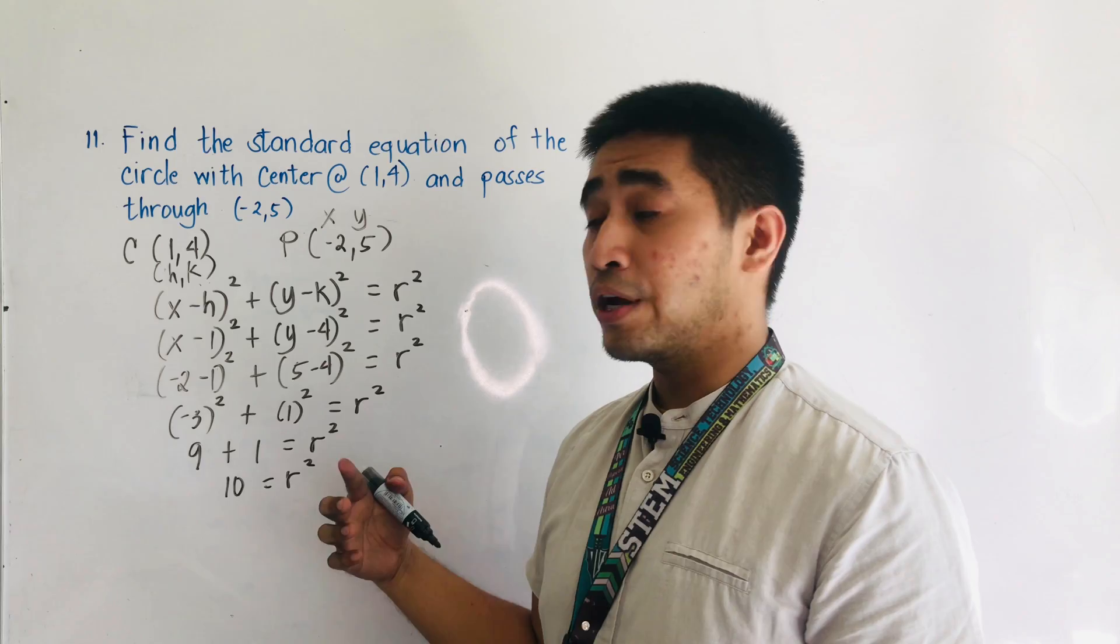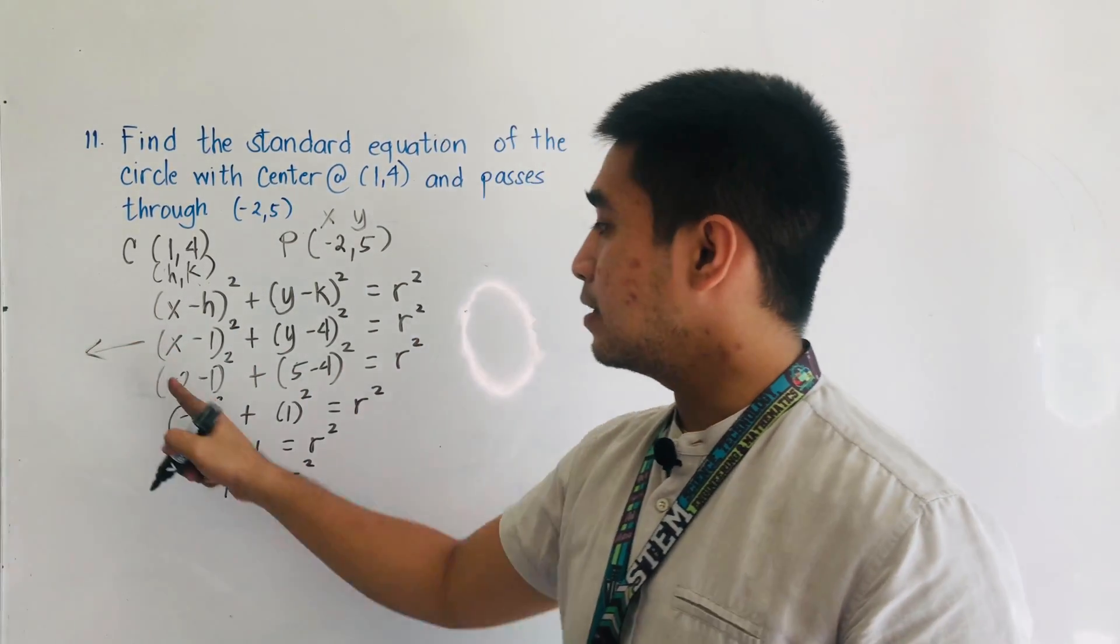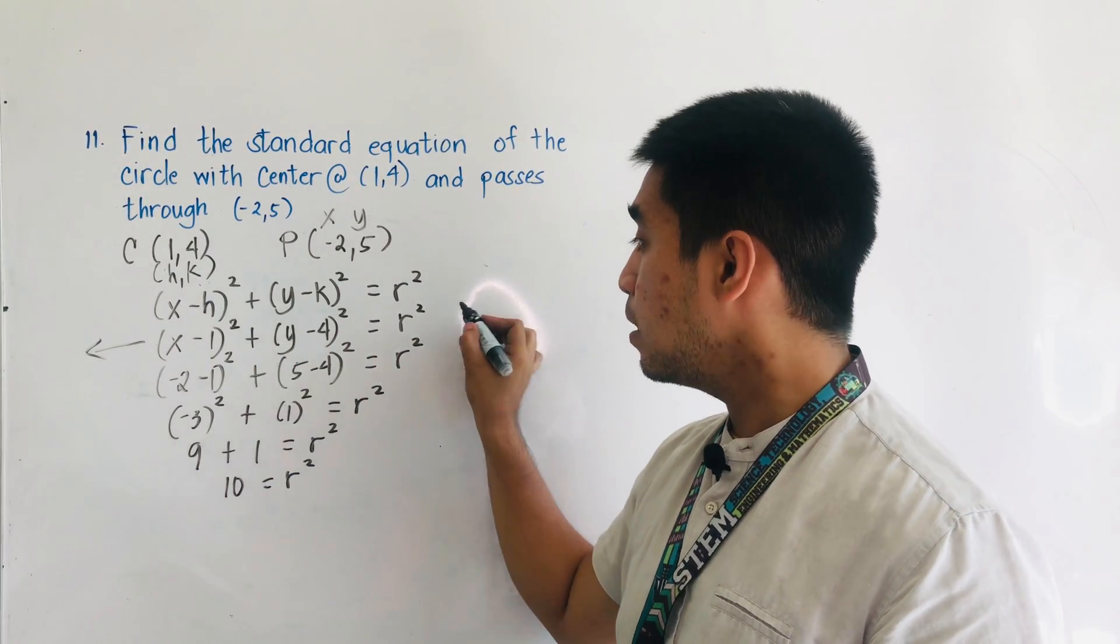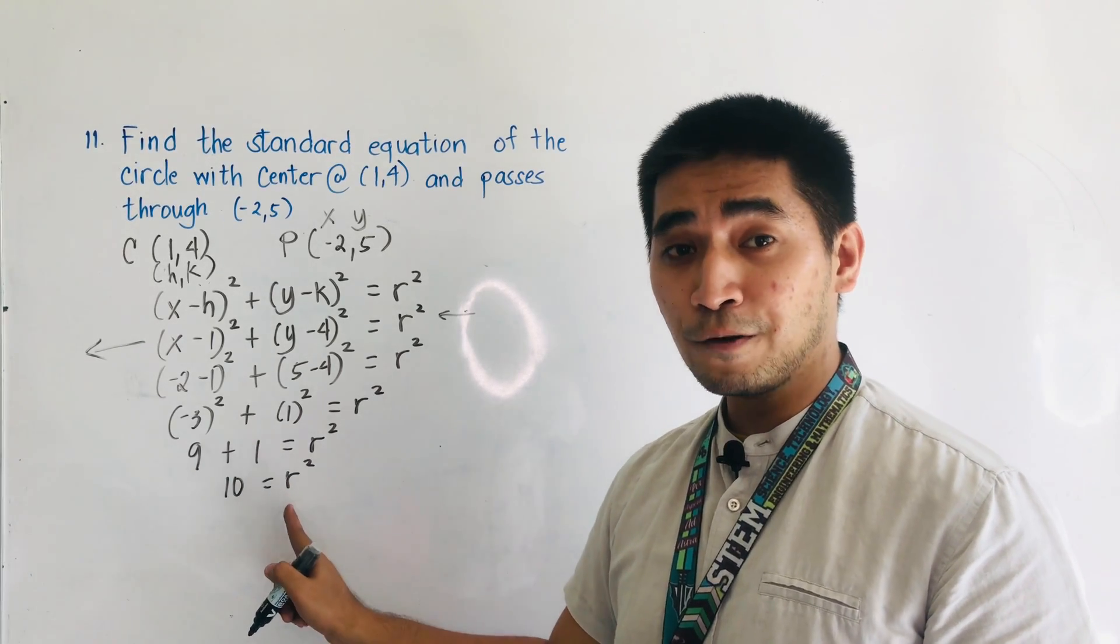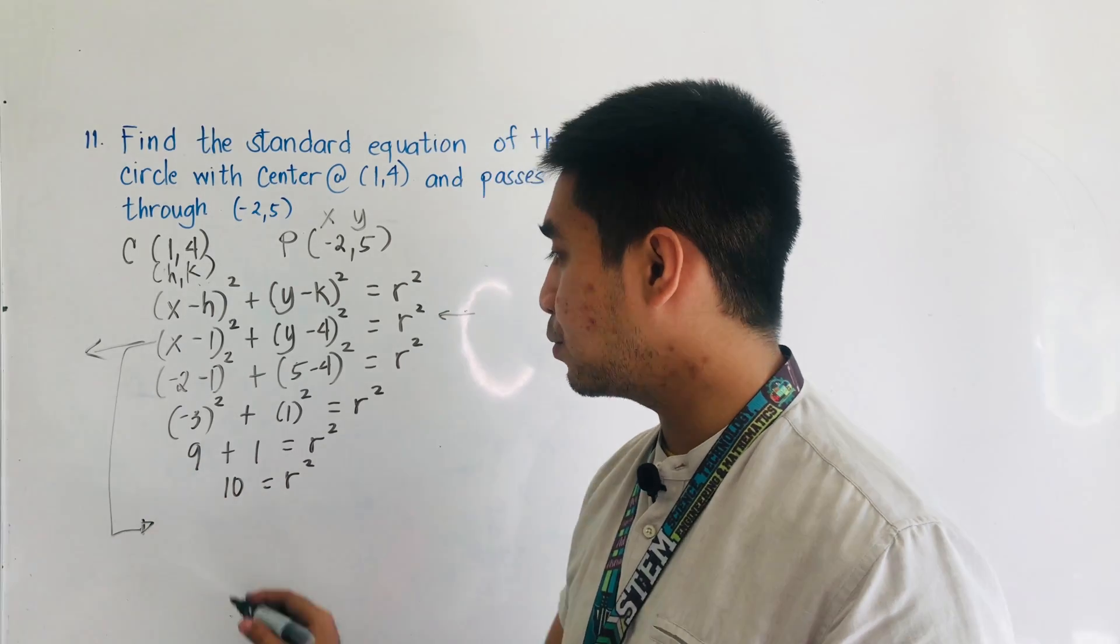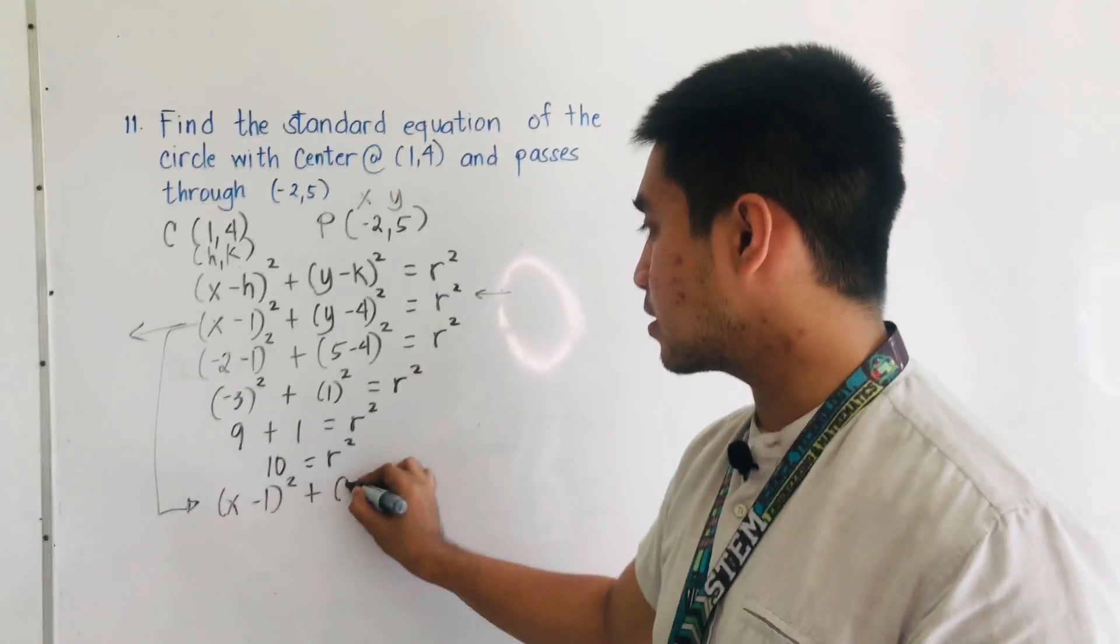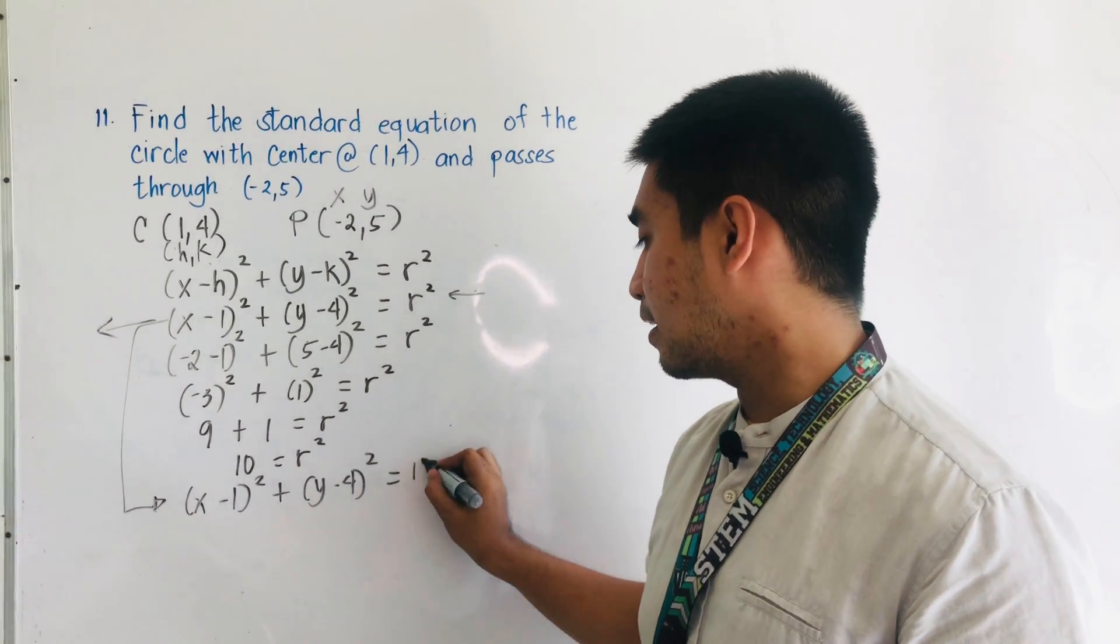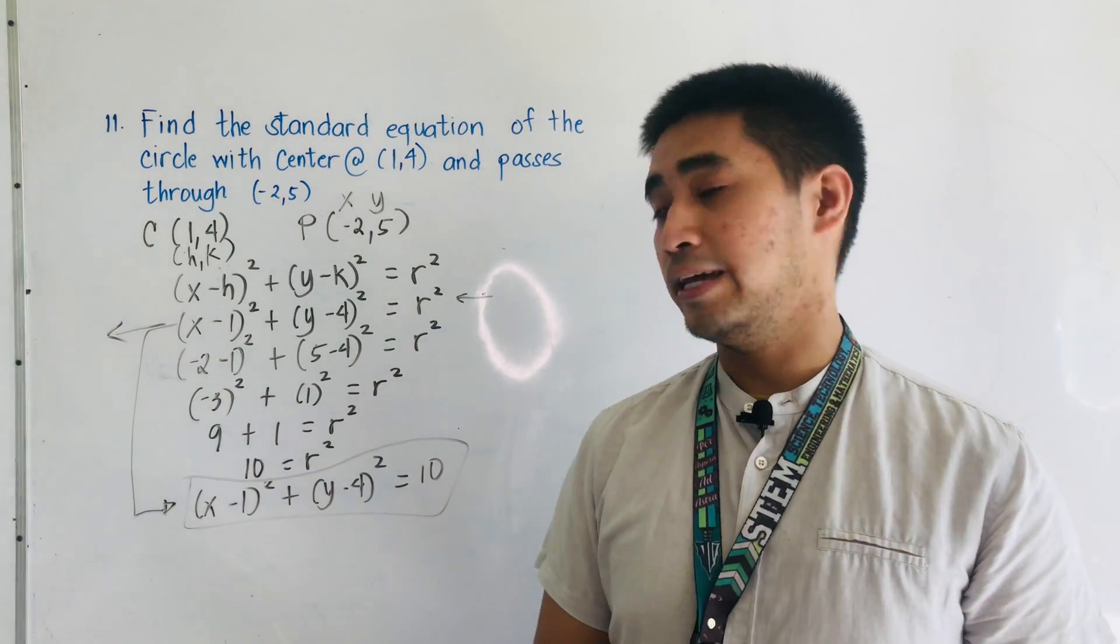So, we are asked to find the standard equation. Based on this one, this is now the standard equation of the circle, center radius form, but there is no r squared yet. But we are able to determine r squared. So, let us use this equation. Therefore, we will be having x minus 1 quantity squared plus y minus 4 quantity squared is equal to what is our r squared? 10. Therefore, this is now the answer to problem number 11.